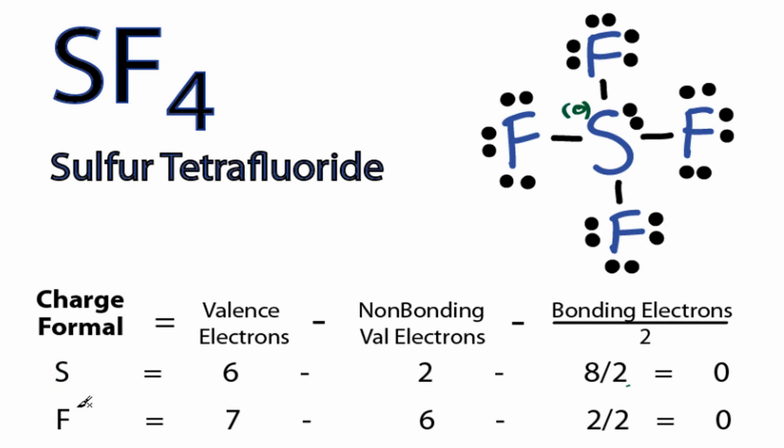For fluorine, on the periodic table, it has 7 valence electrons. It has 6 non-bonding, and then 2 in the bond right here, which we'll divide by 2. 7 minus 6 minus 1 is also 0. And all these fluorines are symmetrical, so we only have to do 1.